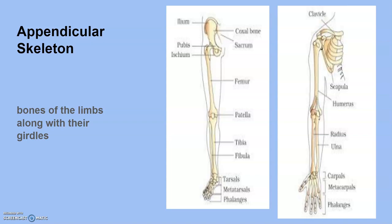The flat expanded process on the scapula is called the acromion; the ridge is called the spine. The clavicle articulates with the acromion. Below the acromion is a depression called the glenoid cavity, which joins with the head of the humerus to form the shoulder joint. Each clavicle is a long slender bone with two curvatures, commonly called the collar bone.